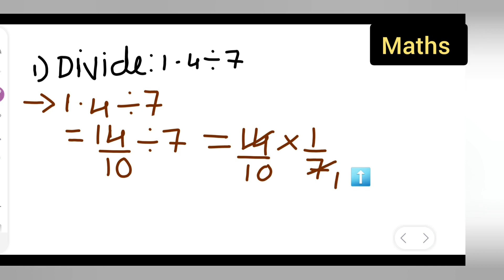Now you can cancel: 7 ones are 7, 7 twos are 14, so basically your answer is 2 upon 10, which is equal to 0.2. So your answer is 0.2.